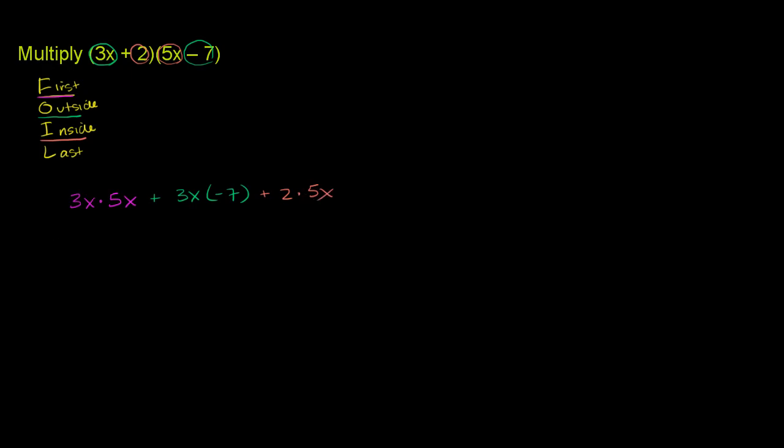And then finally, you have the last terms. You have the 2 and the negative 7. So the last term is 2 times negative 7.